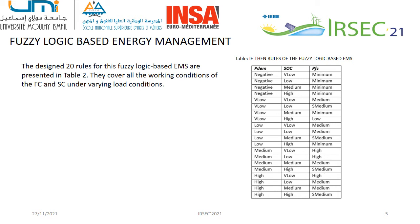This situation depicts the condition of a vehicle when brakes are applied. Under this scenario, the regenerative energy has been used to charge the supercapacitor when it has a low state of charge, while the ultracapacitor remains idle when it has a high state of charge. The fuel cell power remains at its minimum limit. If the supercapacitor is fully charged, the remaining energy will be used for the auxiliaries.